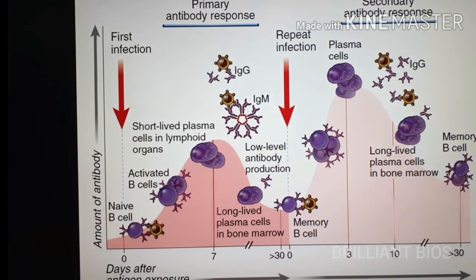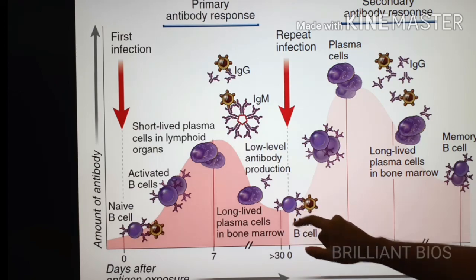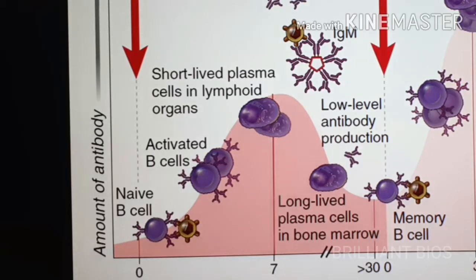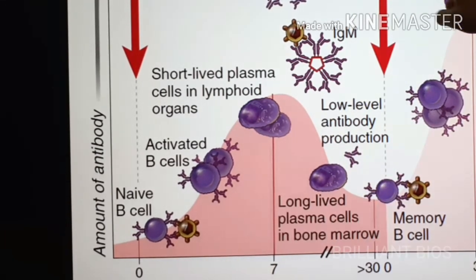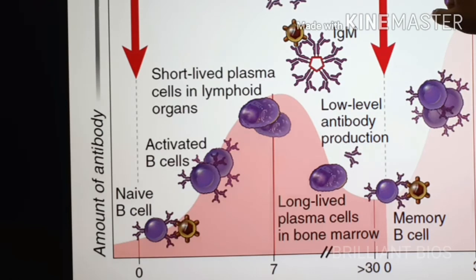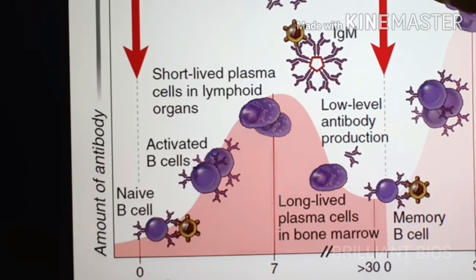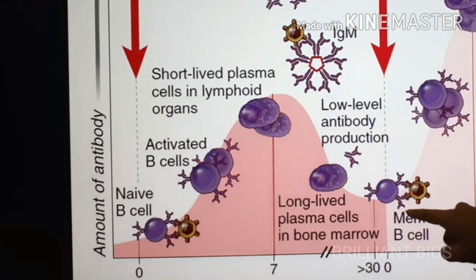In the primary immune response, the naive cells respond after the first infection. If there is another round of infection — a subsequent exposure or repeated infection with the same antigen — now the memory cells react.